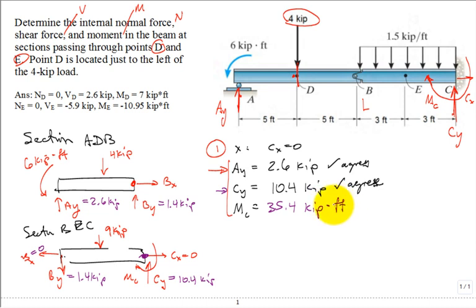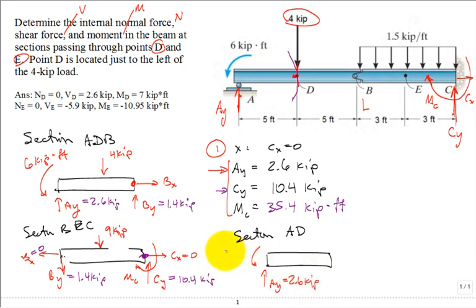Now finally we're set up to go and get an internal. We have to do a section where we cut in the member. Cut right through here. Again, point D is a little to the left. And so my section, free body diagram, would be of member A to D. And here is the A. We have our Ay, which is 2.6 thousand pound. And then we have our 6 kip foot. And we have no 4 kip load because it's a little to the right of where D is.